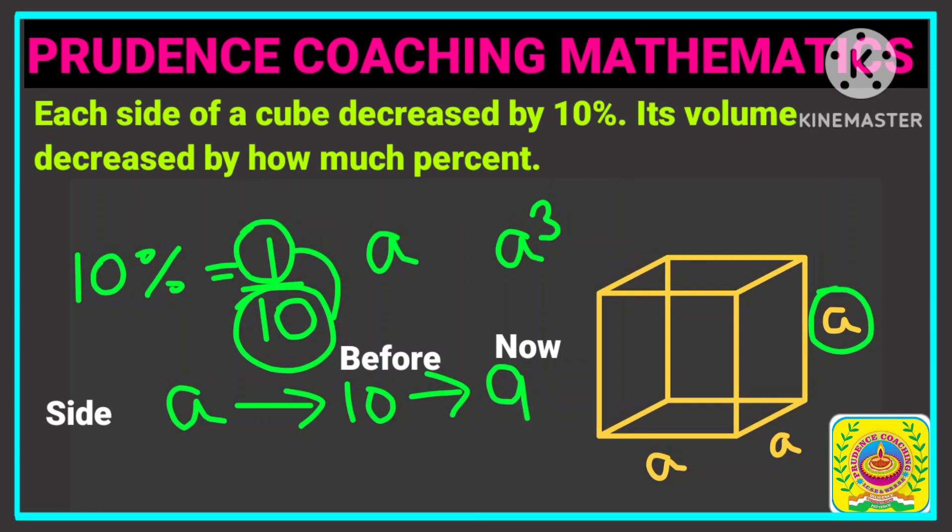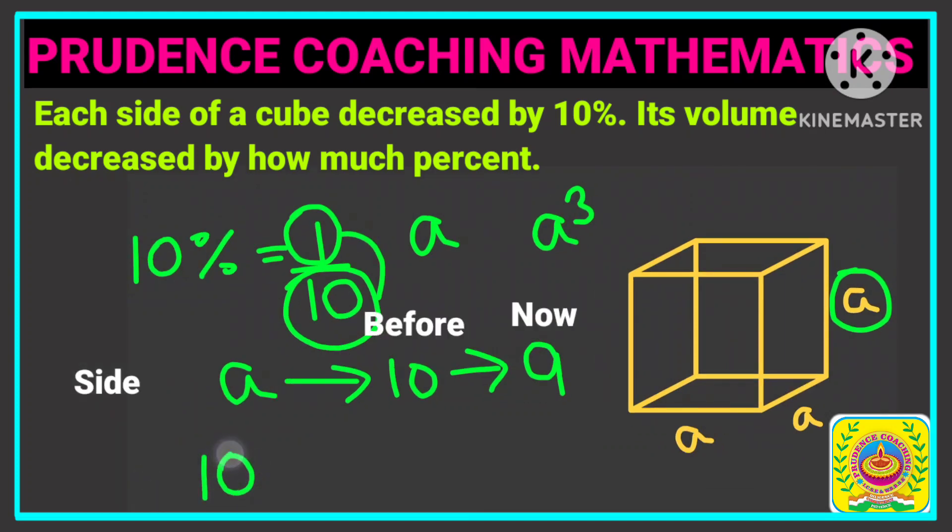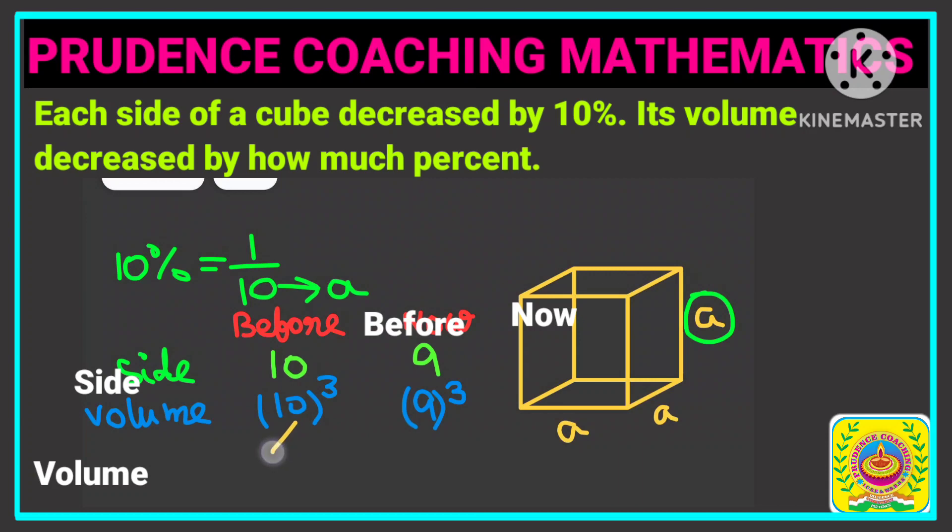Now you are asked to find out how much percentage its volume has decreased. So here if 10 was the previous side, then now the side is 9. And we know volume is A cube. So let us find out 10 cube, that is the previous volume, and 9 cube is the present volume.